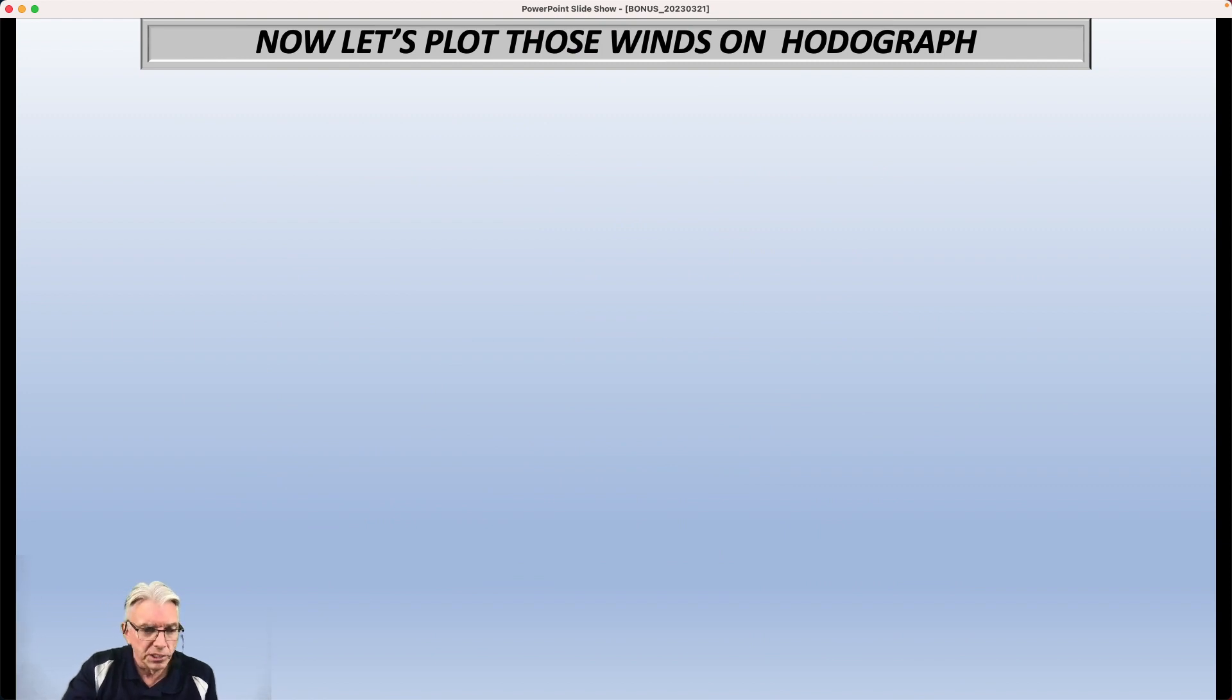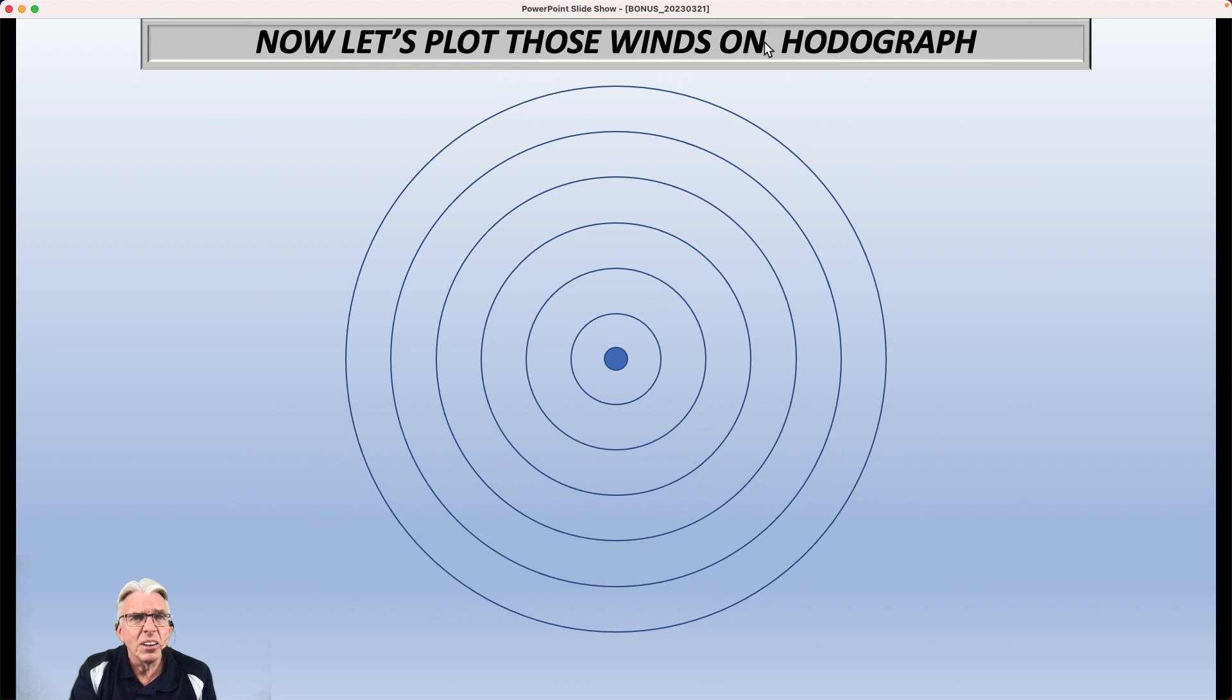So here is what a hodograph looks like as we plot those winds on top. You have your origin right here in the middle. My cursor is there, it is right there in the middle. And so each one of these lines around that circle represents a wind speed. So the first circle is 10 knots, the second one is 20, third one is 30, fourth one is 40, fifth is 50, and the sixth one is 60. So each circle represents an increase of speed by 10 knots.